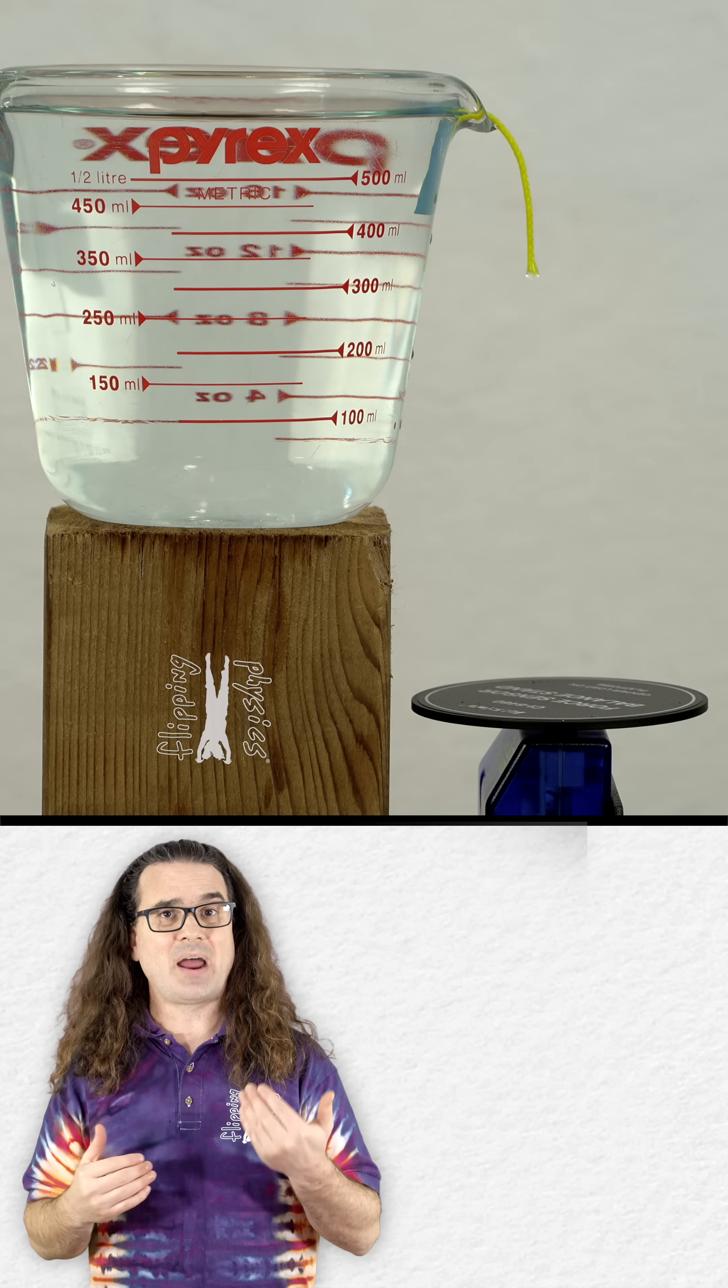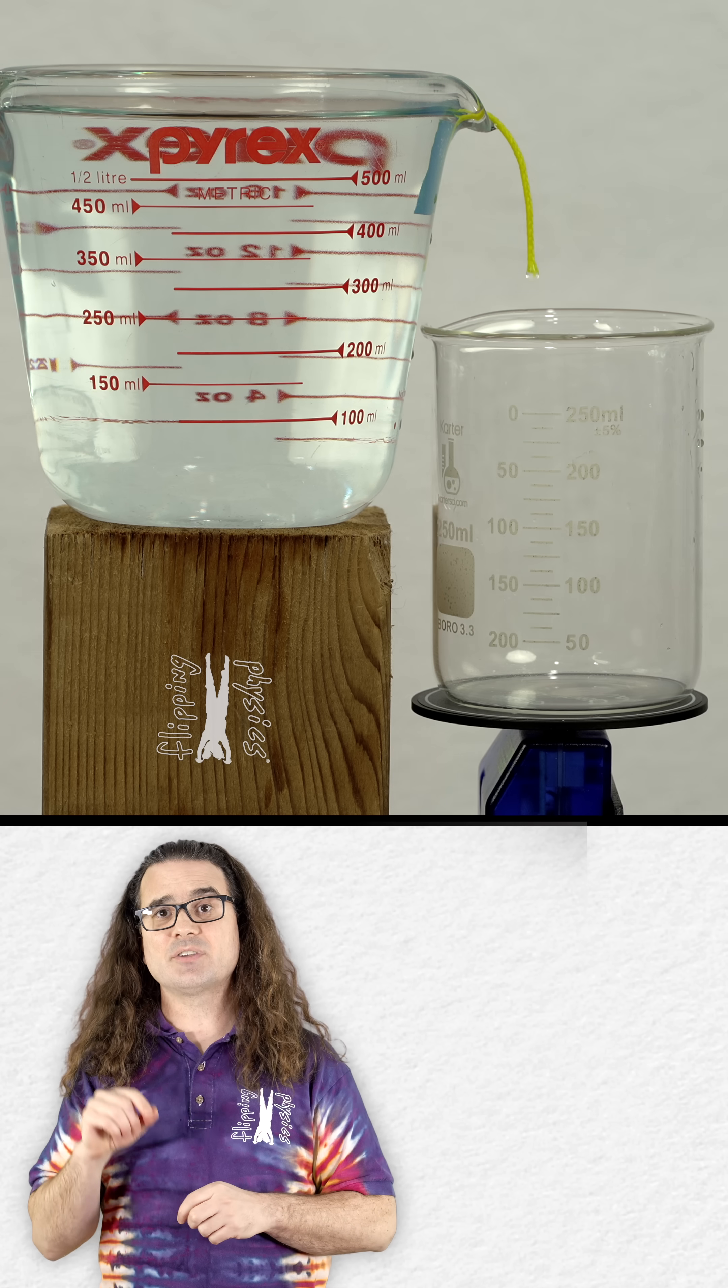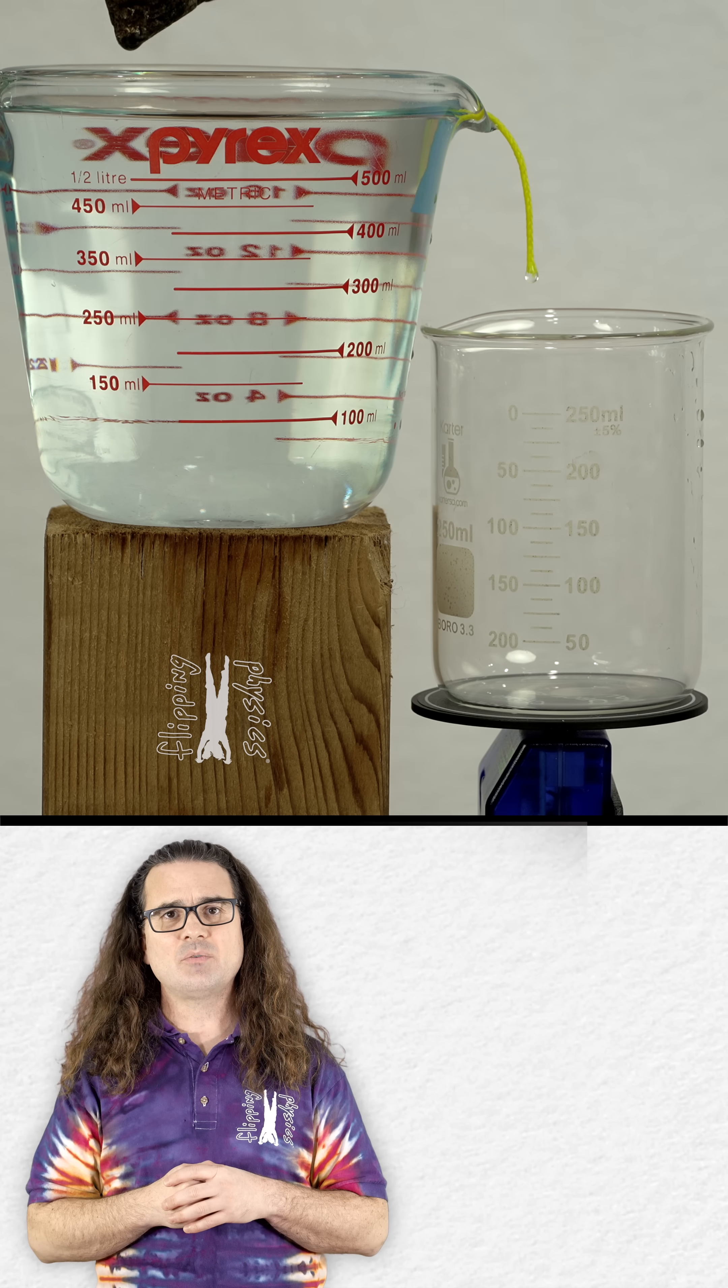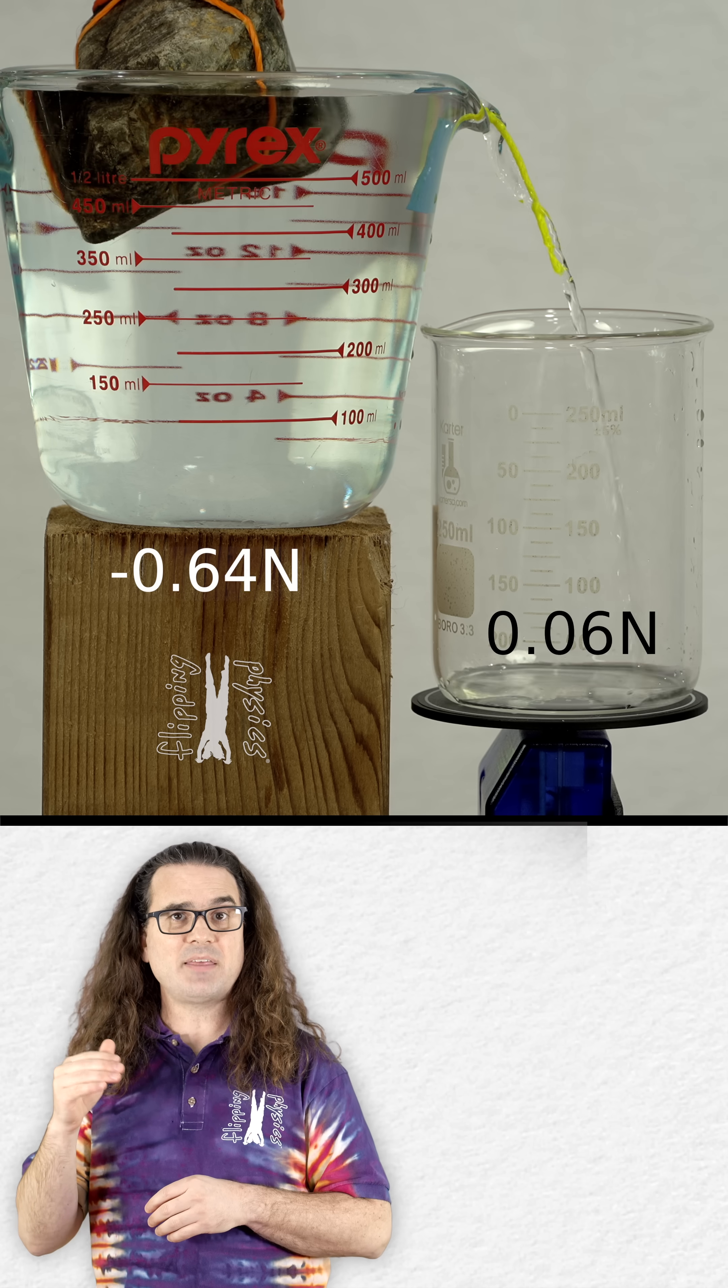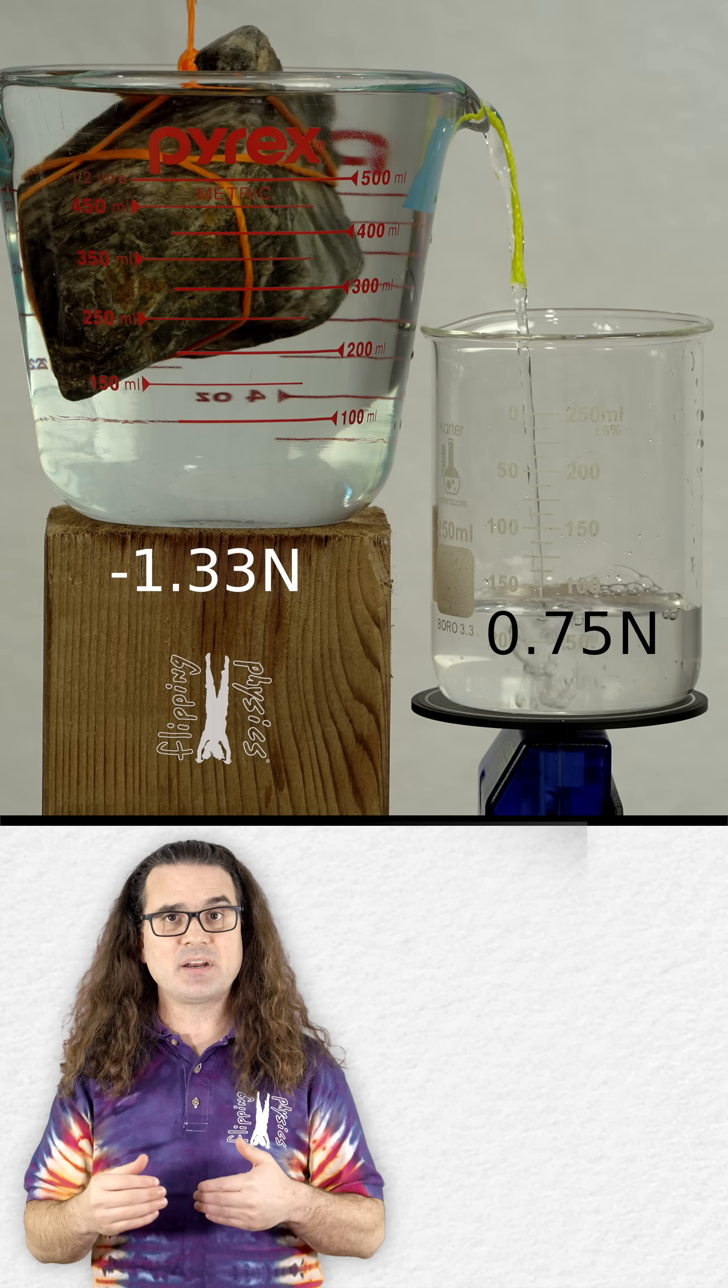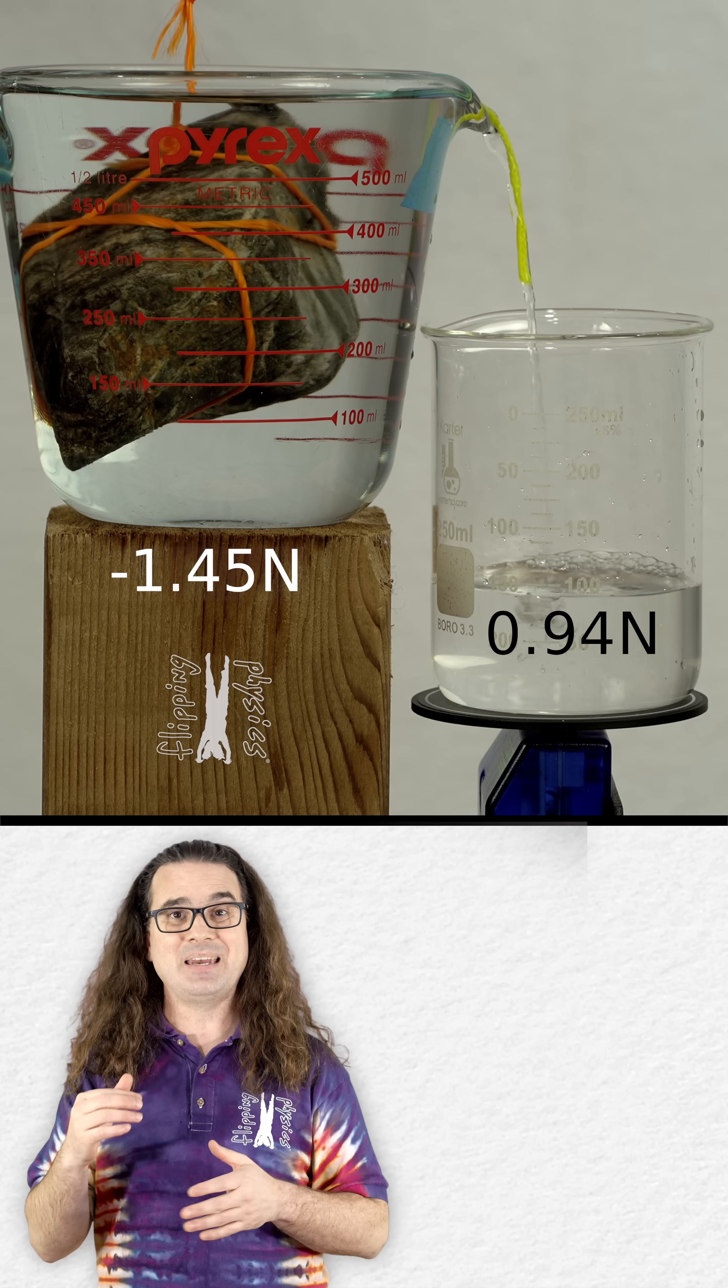Let's empty the little beaker of water and dry it out. Notice the little beaker is also on a force sensor which I have zeroed out. As I lower the rock into the water in the measuring cup, the water displaced by the rock flows out of the measuring cup and into the beaker. Fast forwarding until all the excess water has flowed into the beaker,